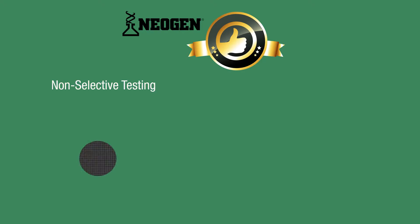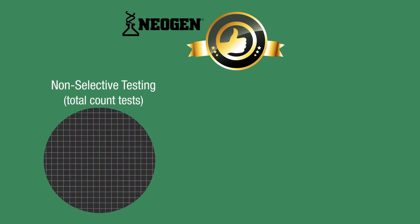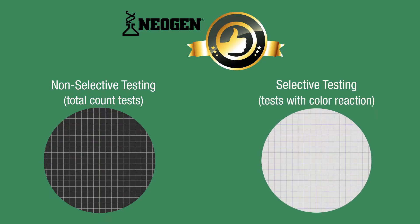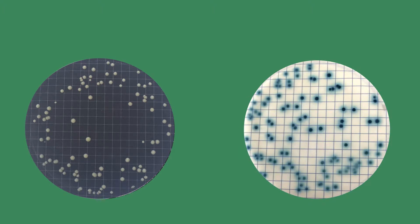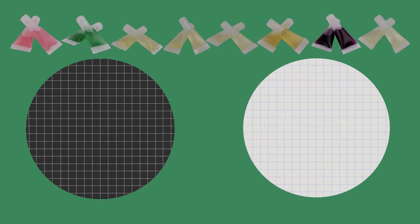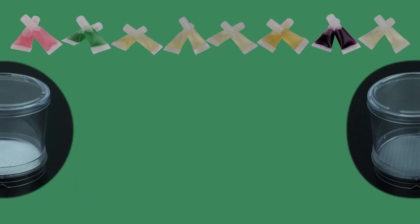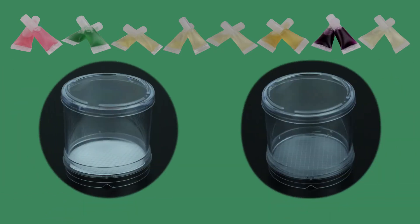Neogen recommends running non-selective testing total count tests on black Neogen filters and selective testing tests with color reactions on white Neogen filters. Doing so helps you better visualize small or white colonies against a black background and to better differentiate color reactions against a white background. However, Neogen filters are interchangeable. Any ampule can be run on either color of membrane. Customers can choose their preference for each test.